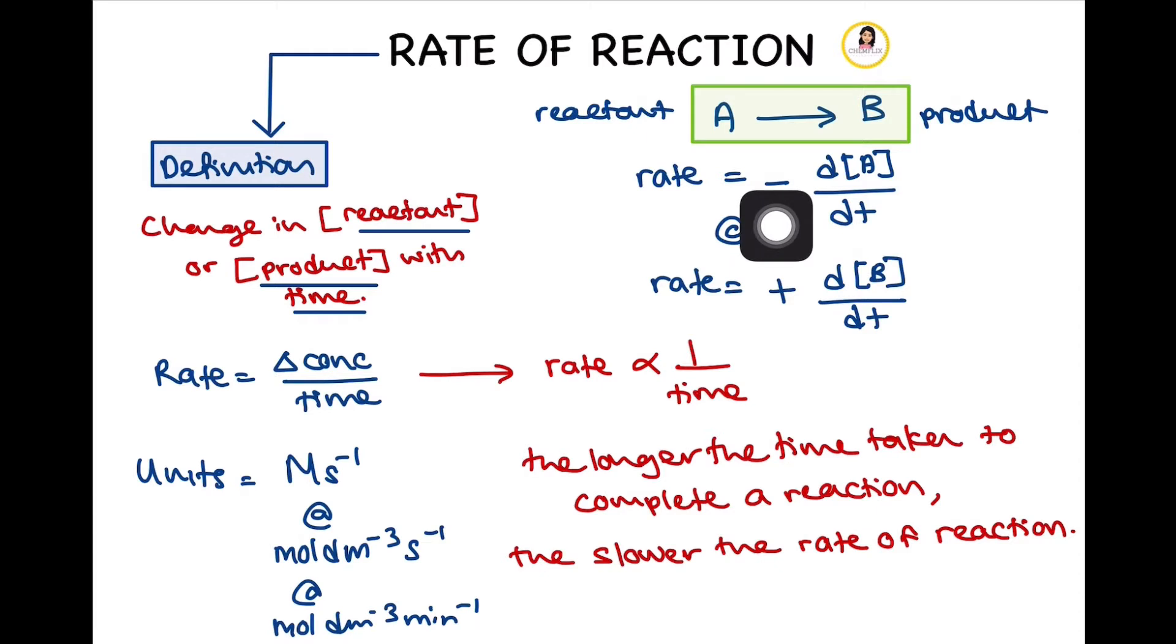If you realize, there is a negative sign in front, which indicates that the concentration of A decreases with time. A is a reactant; therefore, the concentration of it will decrease over time throughout the reaction. We use the negative sign to represent that.